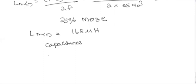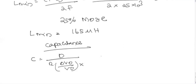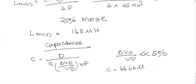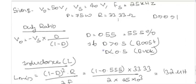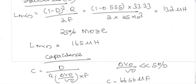For the capacitance value, we consider the voltage ripple, which should be less than 5%. Using the equation C = D / (R × (ΔV_out/V_out) × F), we get C = 66.66 µF. Now we have all the design parameters: duty ratio, inductance, capacitance, switching period (1/F), and resistance. We can now go to MATLAB and run the simulation.